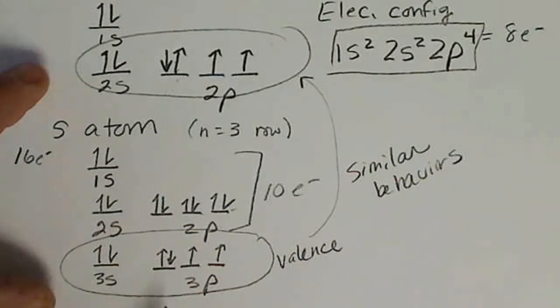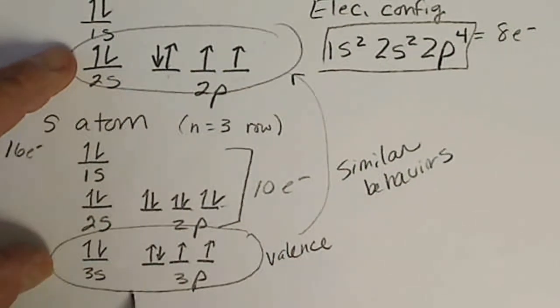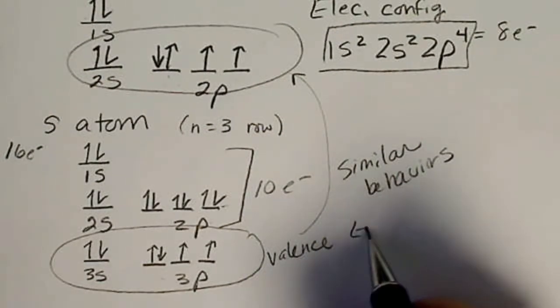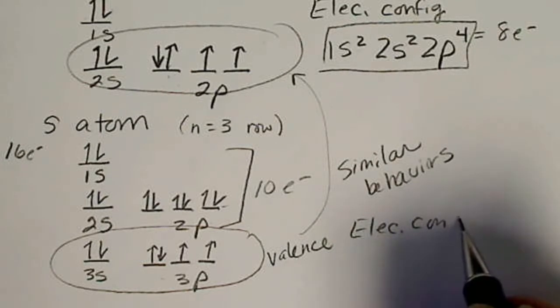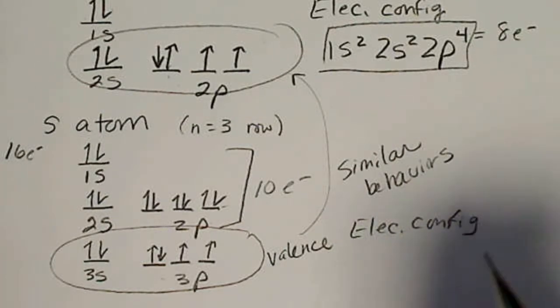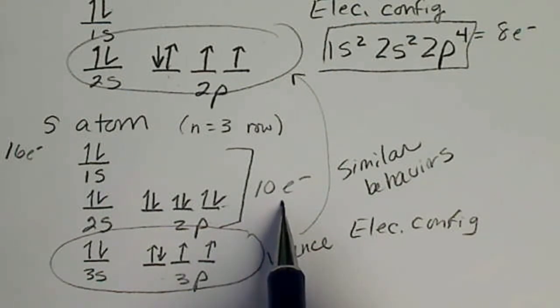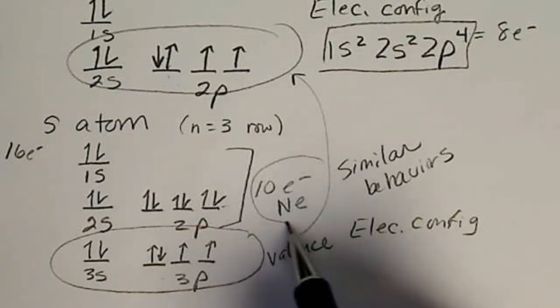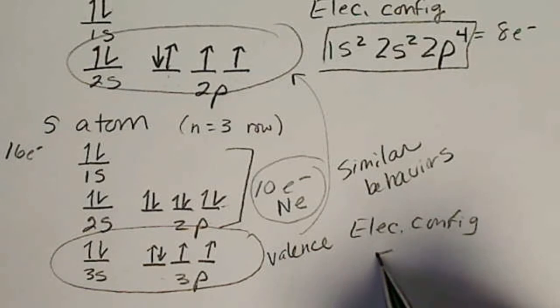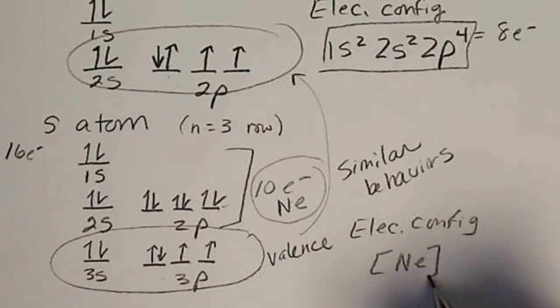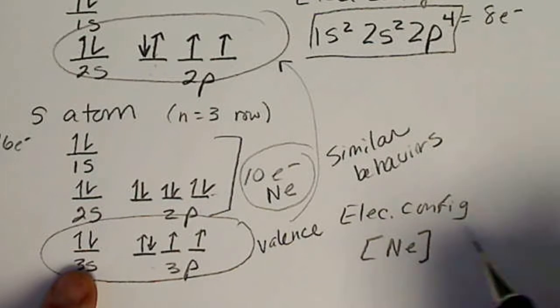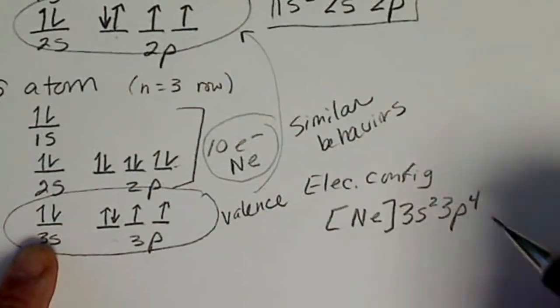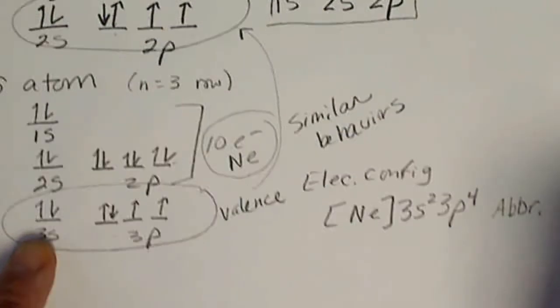The electron configuration for sulfur, we can do the abbreviated form. Since 10 electrons is the same as neon, we can write this as [Ne] 3s2, 3p4. That's the abbreviated form.